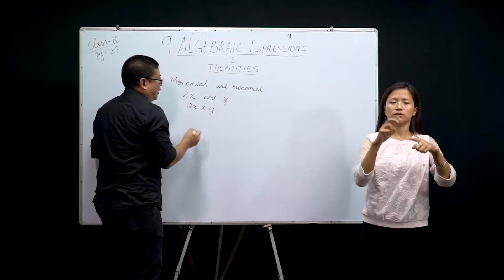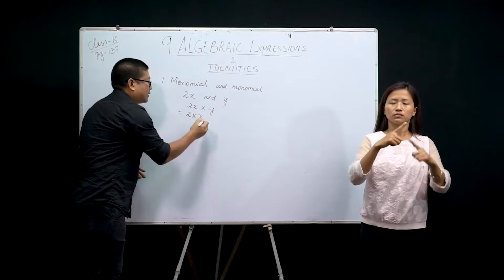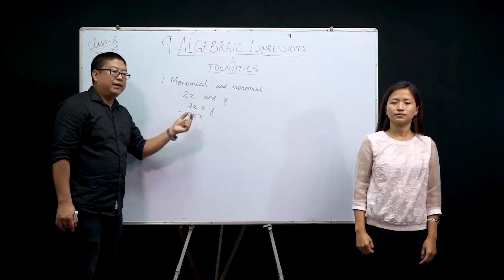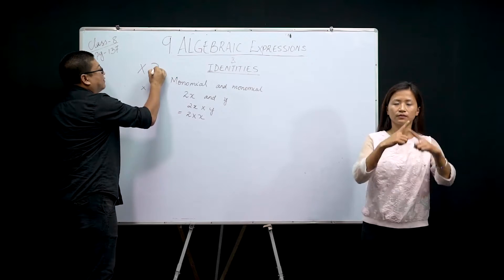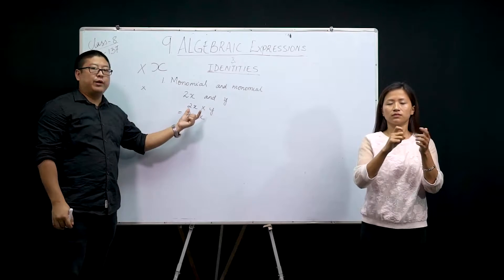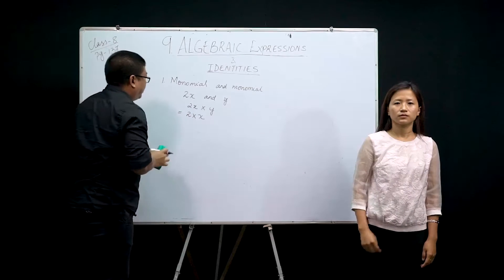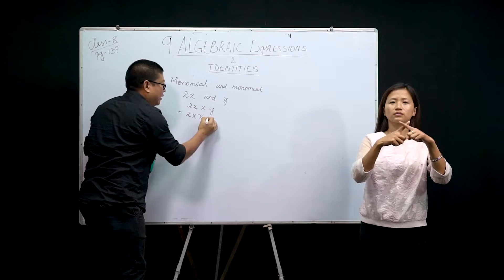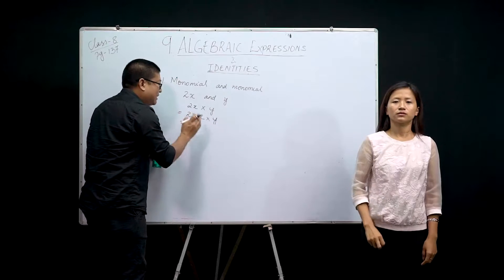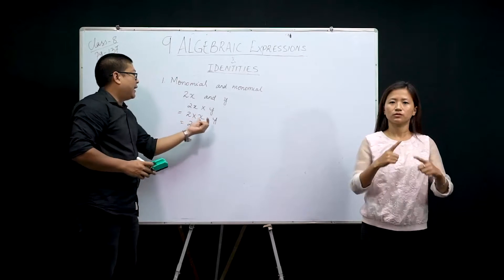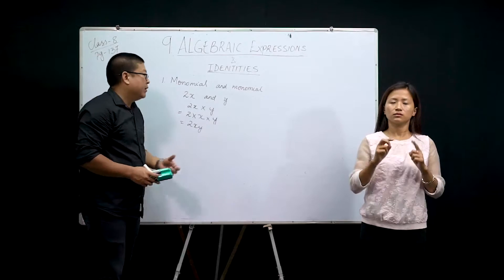Let's multiply these two: 2x into y. When we write 2x, it simply means 2 into x. Please write the multiplication sign clearly so there is no confusion when you multiply x and numbers. Now, 2x into y — these are all different variables and numbers, so we cannot multiply them; we simply join them. The answer is 2xy.